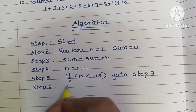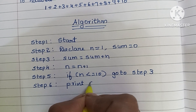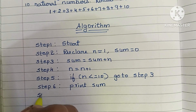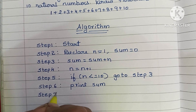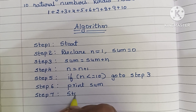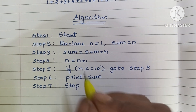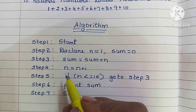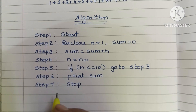If the condition is false, it goes directly to step 6. In step 6 we have to print the sum value. In step 7 we have to stop the algorithm using a stop statement. This is the algorithm to find the sum of the first 10 natural numbers.